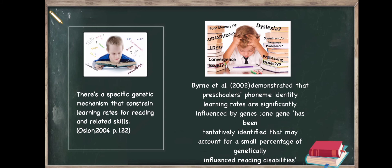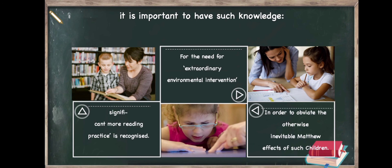It is very unfashionable to suggest that reading difficulties may have a genetic origin, on the grounds that this explanation may absolve parents and teachers from instructional responsibilities. However, Olson suggests that on the contrary, it is important to have such knowledge so that the need for extraordinary environmental support or intervention, as well as significantly more reading practice, is recognized — in order to alleviate the otherwise inevitable Matthew effects on such children. Extraordinary environmental interventions include summer reading camps in the community, and significant reading practice is recognized not just at school but also at home with parents or guardians.